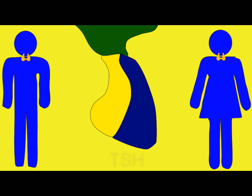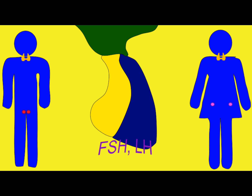Luteinizing hormone, or LH, is one of the gonadotropins — one of those hormones made from the pituitary — which affects hormonal release from the gonads.